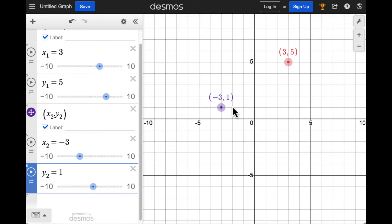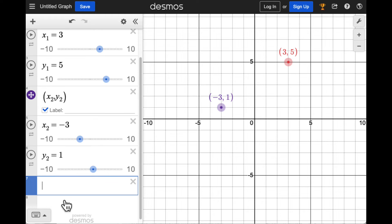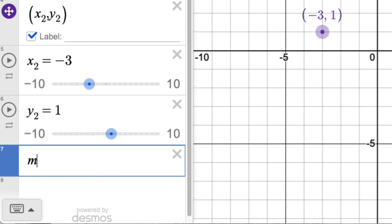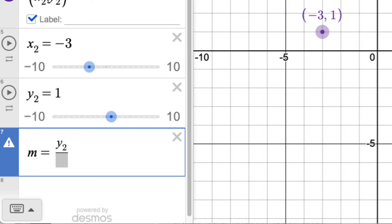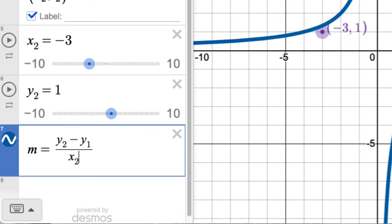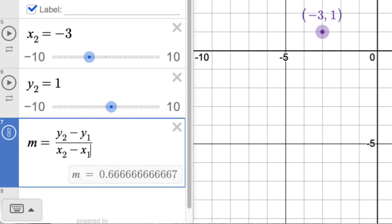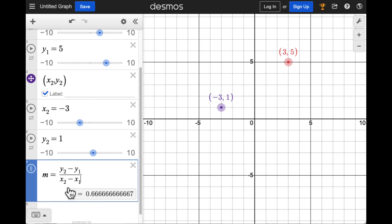Now create an equation that shows the slope formula as shown here. M equals the ratio of y2 minus y1 over x2 minus x1. You'll see that M is calculated here.